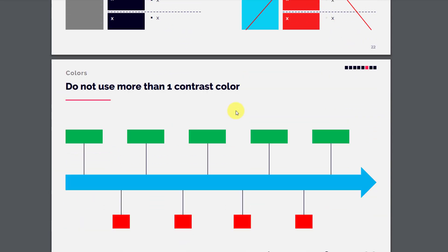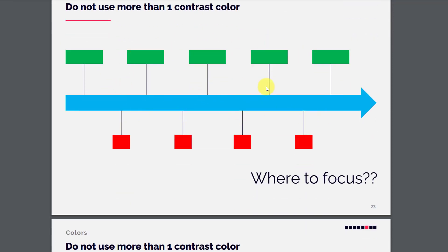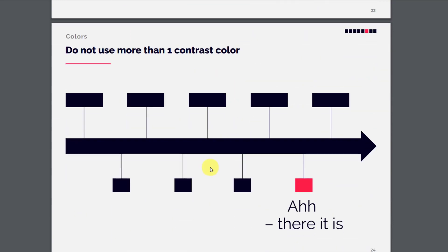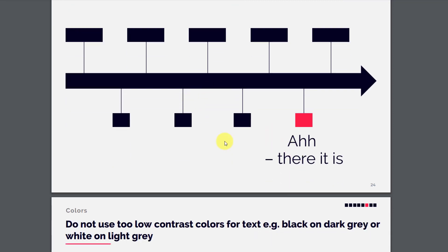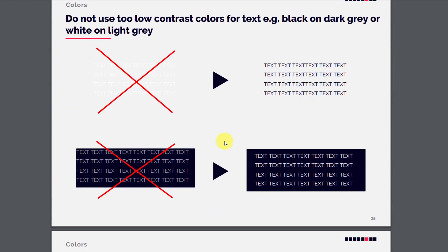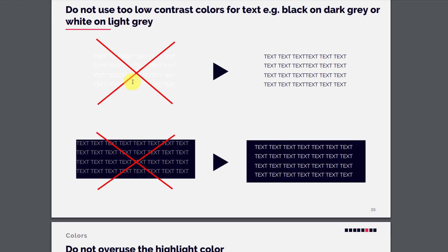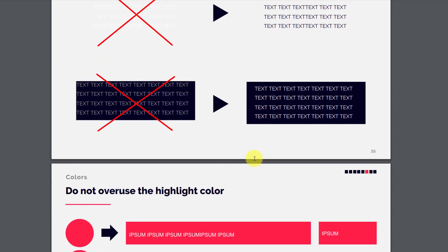Do not use more than one contrast color. If all elements are colored differently, you cannot focus on anything. But if you have the same structure with only one contrasting color, you can focus on exactly that thing. In a slide, everything cannot be important — if everything is important, nothing is. Use contrasting colors on only one or two things, and keep others a similar tone. Also, do not use too low contrast for text — white on white or dark on dark is not visible; use dark on white or light on dark.